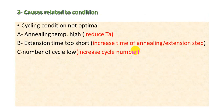Cause number three is related to cycling conditions — non-optimal cycling conditions can cause no band in gel electrophoresis. You should check your cycling conditions. For example, if the annealing temperature is too high, you can reduce it. If the extension time is too short, you should increase the extension step duration. If the number of cycles is too low, you can solve this by increasing the cycle number.